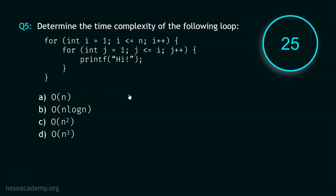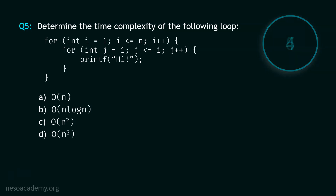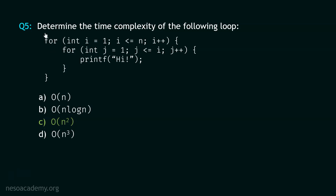Now let's move to question number 5, and your time starts now. Stop. The correct option is option C — Big O of log N square. The time complexity of this nested loop structure is Big O of N square. This is a dependent nested loop structure, as the variable I from the outer for loop is used in the inner for loop.